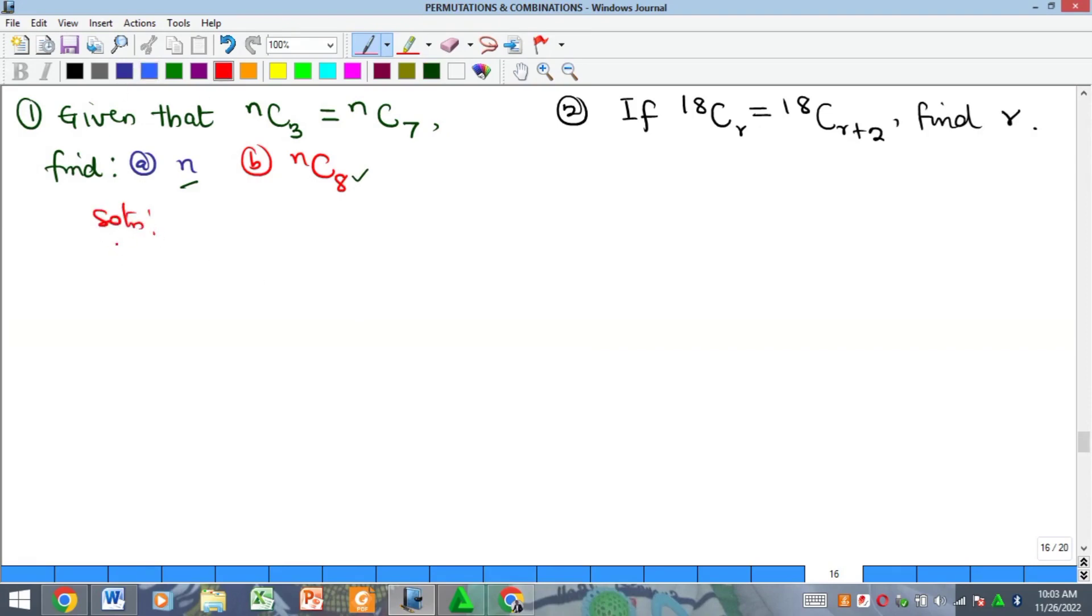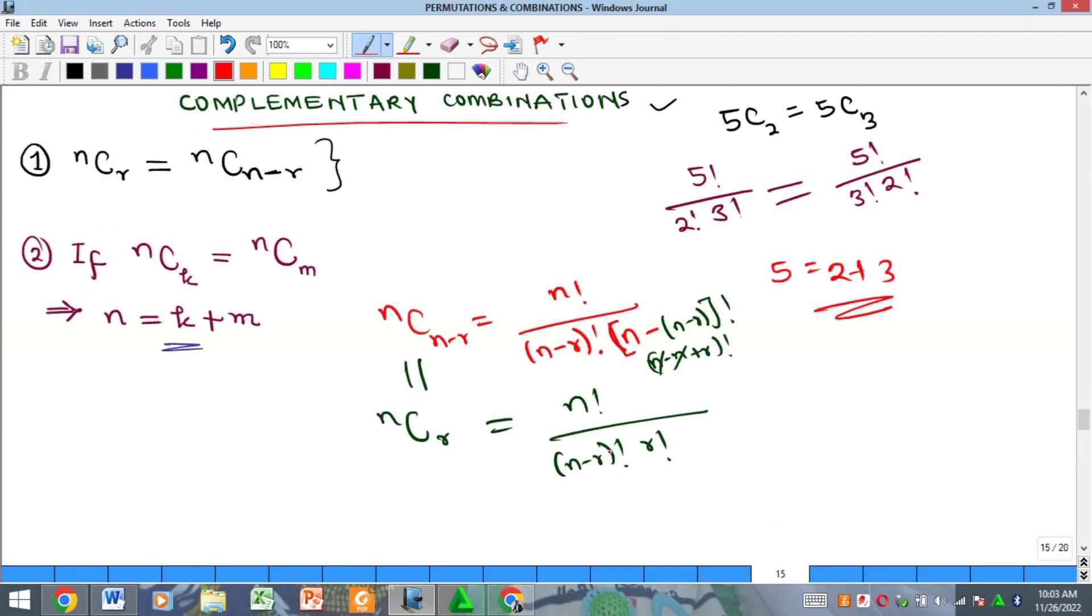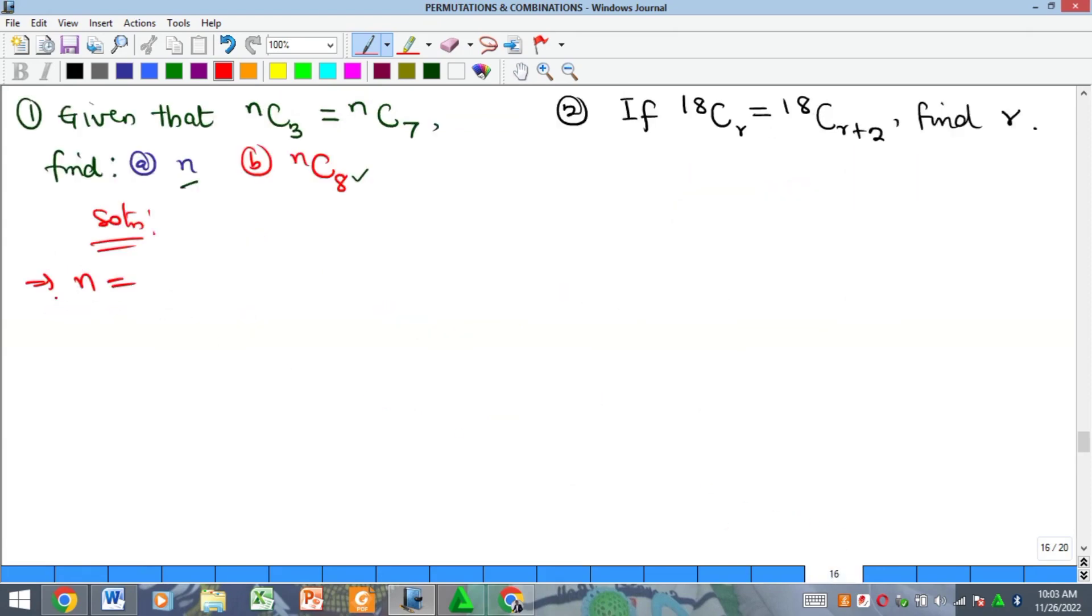To find our n is very simple. We will apply the concept of complementary combinations because of course the n's here are the same. So that means that our n by that second point I gave here, our n is going to be the sum of the two r's. So we're going to have 3 plus 7, so that means our n is actually equal to 10. So this is the part A.